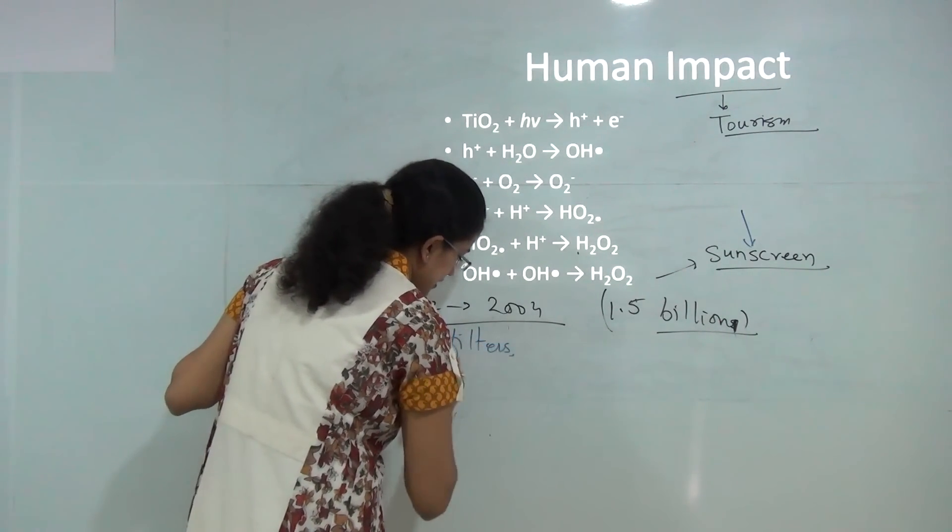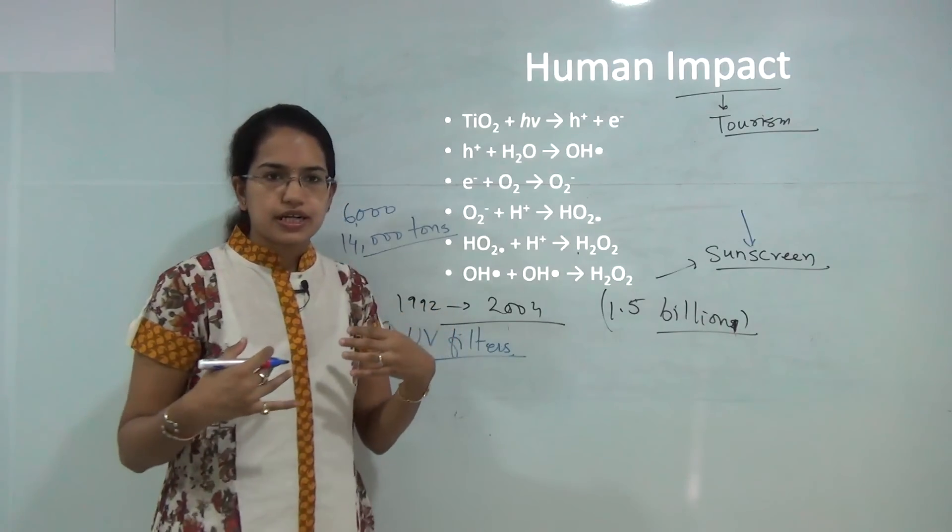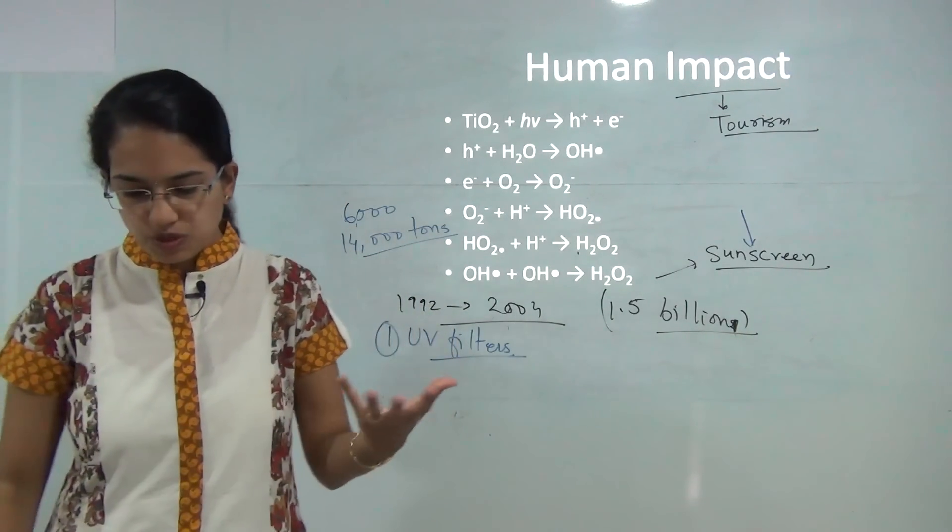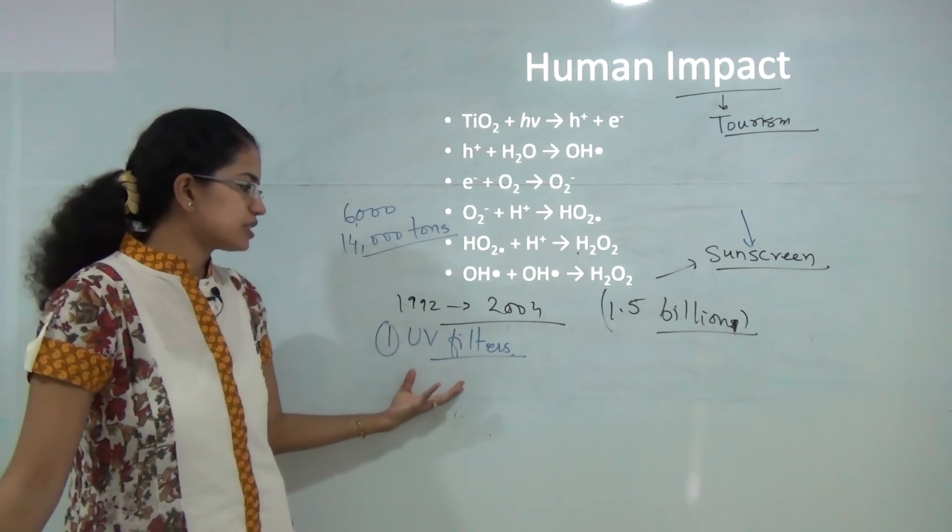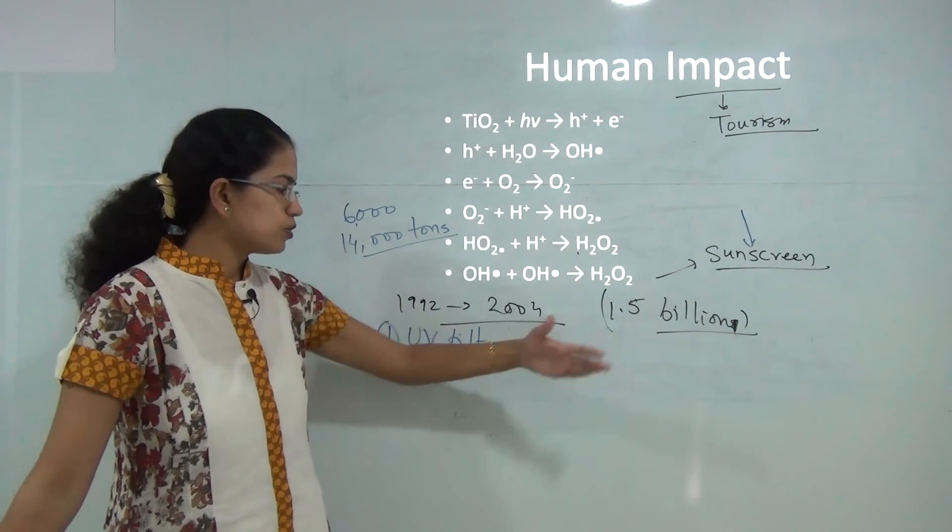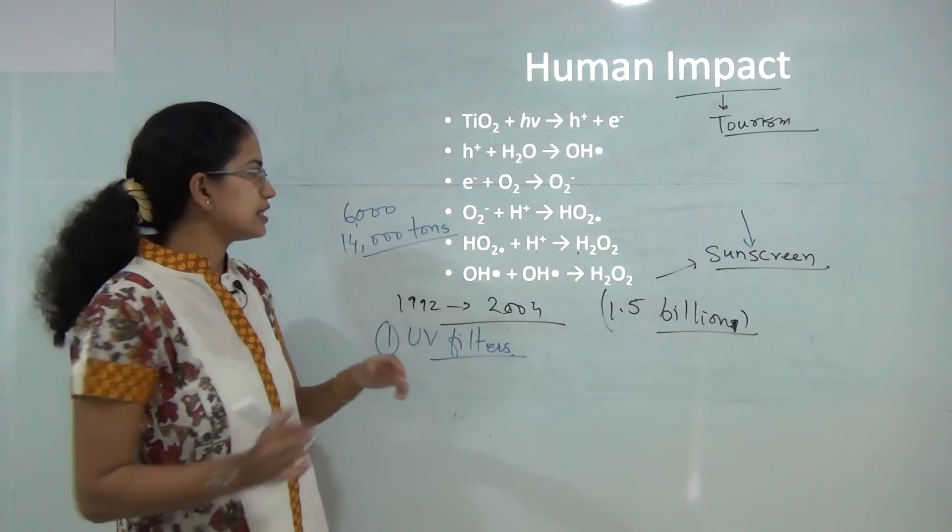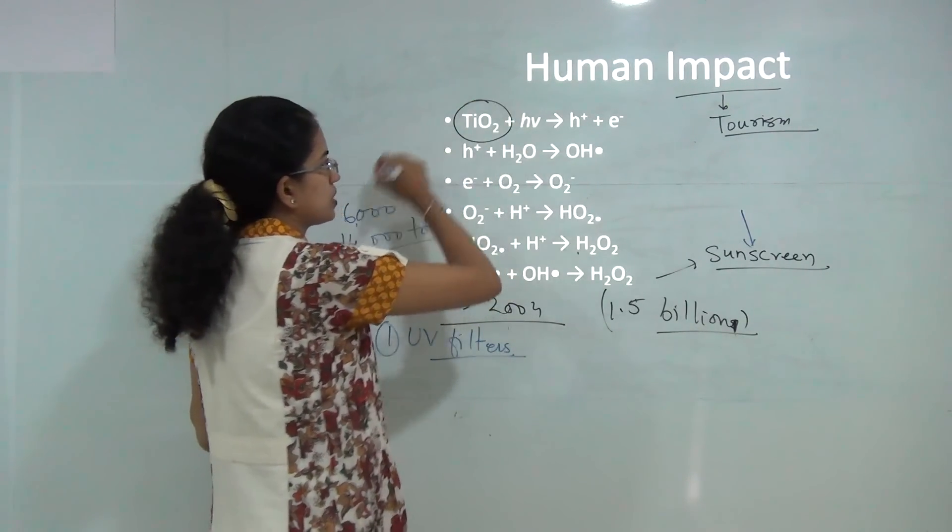It has ultraviolet filters which are meant to protect us but when these ultraviolet filters absorb the ultraviolet rays from the sunlight but when they are disposed out into the ocean they harm the population of the corals and the other is the presence of titanium oxide.